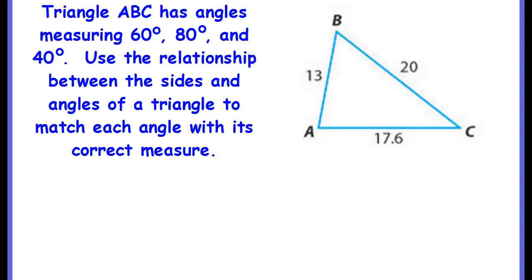Now we're going to look at it being given the side lengths, and we're going to figure out where the angle degrees go. Triangle ABC has angles measuring 60 degrees, 80 degrees, and 40 degrees. Use the relationship between the sides and angles of a triangle to match each angle with its correct measure. Large is opposite large, medium is opposite medium, small is opposite small. I'm going to start with the largest side, which is 20. Which vertex does side 20 not touch? It touches B and C, but not A. So angle A is opposite the 20 — since 20 is the largest, angle A is the largest, which would be 80 degrees.